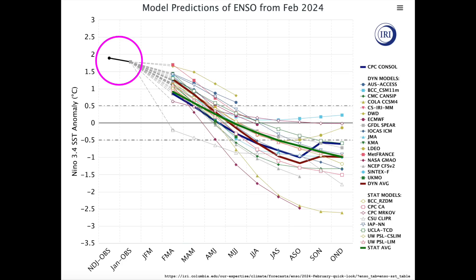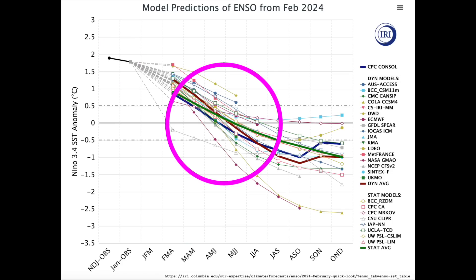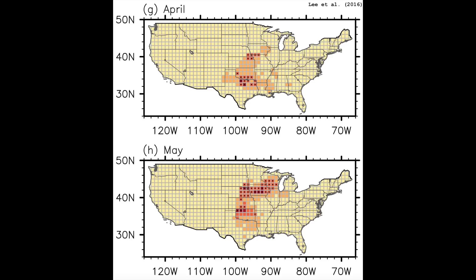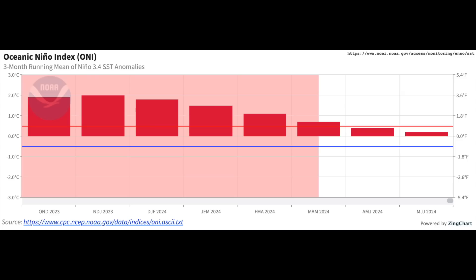Back in February, we were in a moderate to strong El Niño that was expected to shift into a neutral and perhaps weak La Niña phase by summer. This most closely matched Lee et al.'s early terminating El Niño progression, which tends to feature heightened tornadic activity from the central plains into the Midwest, as well as in the southern plains, particularly in April and May. This ENSO forecast ended up being pretty accurate, as our three-month running average of equatorial Pacific sea surface temperature anomalies decreased rapidly into the neutral phase by around May, with continued decrease into June.